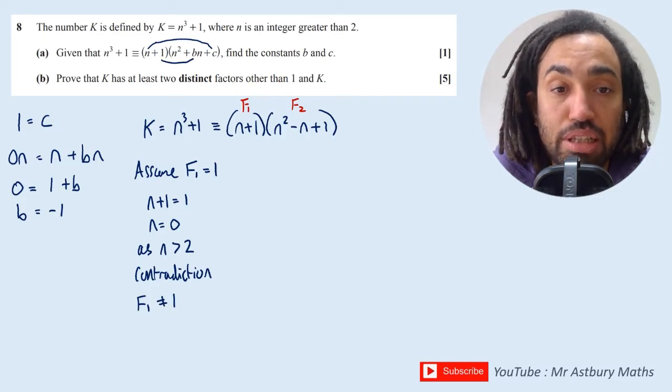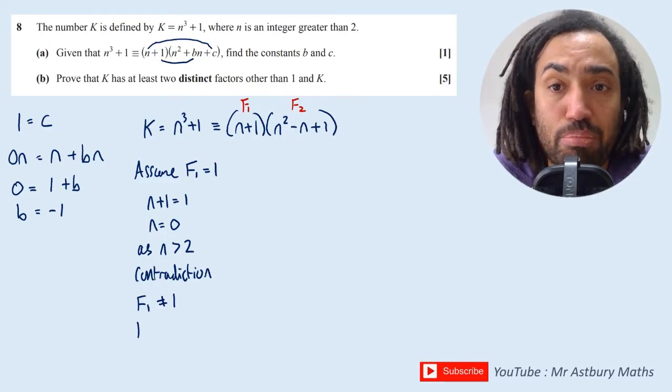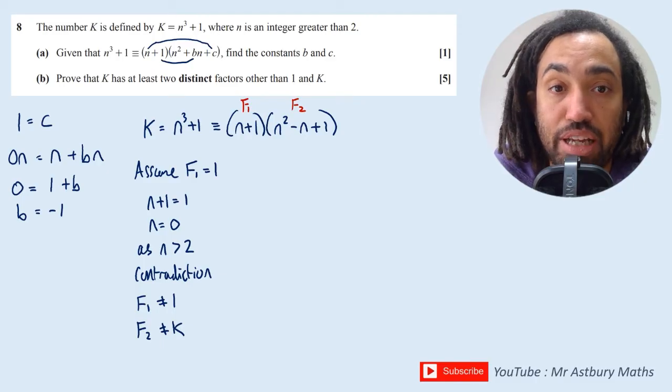So I can write here contradiction, and that implies that the assumption that we made was false, so F₁ does not equal 1. And if F₁ doesn't equal 1, then it means that F₂ can't be k because we know that F₁ and F₂ multiply to make k.